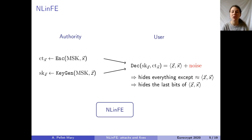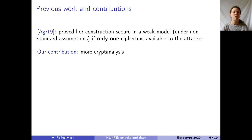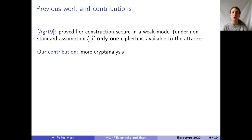You would like that the ciphertext and secret key hide everything except this approximation of the inner product. You also want the last bits of the inner product to be hidden: if you have two inner products that are roughly the same, you should not know which one it is — the last bit should be hidden by the noise.